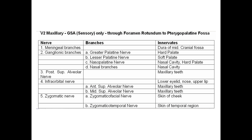Other branches include the posterior superior alveolar nerve for the maxillary teeth — this is important. The infraorbital nerve goes to the lower eyelid, nose, and upper lip. The infraorbital nerve also gives off the anterior superior alveolar nerve and the middle superior alveolar nerve, both for the maxillary teeth.